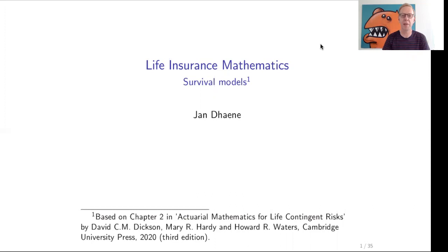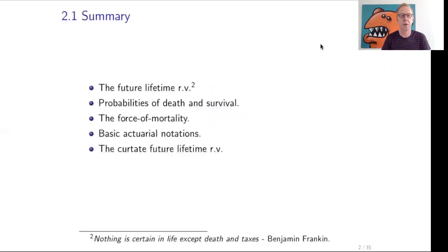We will not really talk about life insurance already in this chapter, but we will look at how we can model in a stochastic way the survival of people. In this chapter two, we will consider the future lifetime random variable. We will define all kinds of probabilities related to death and survival of individuals, define the important concept of the force of mortality, introduce basic actuarial notation, and discuss the curtate future lifetime random variable.